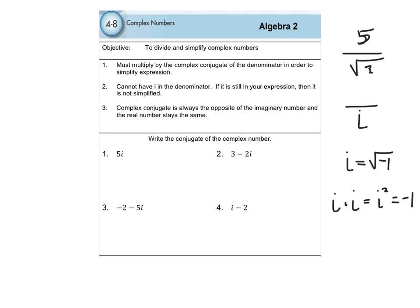So we are looking at being able to multiply by the complex conjugate. One of the things we have to figure out is how to find the complex conjugate. The conjugate is always the opposite of the imaginary number — the real number stays the same. So if the imaginary number is negative, we make it positive; if it's positive, we make it negative. Then we leave the real number alone.